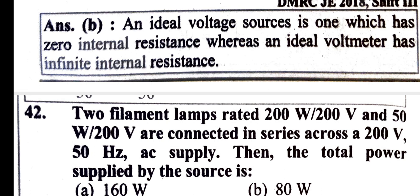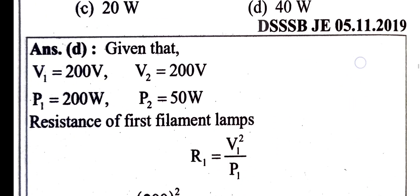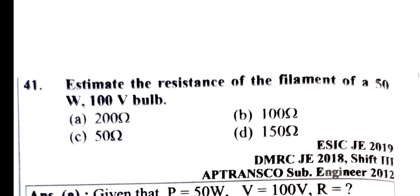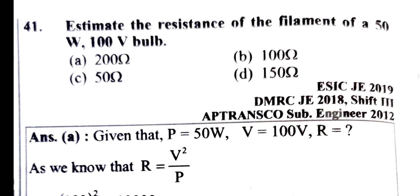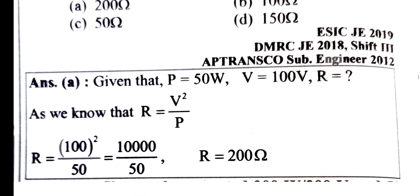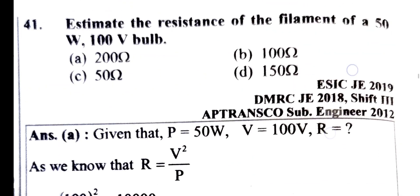Estimate the resistance of a filament of a 50 watt, 100 volt bulb. We have the power and the voltage. R is equal to V² by P, which gives 200 ohm.